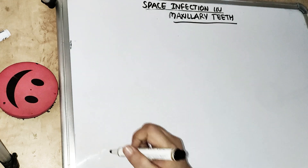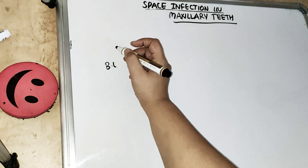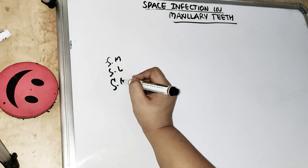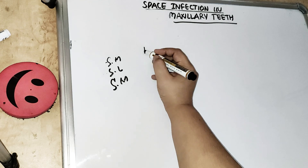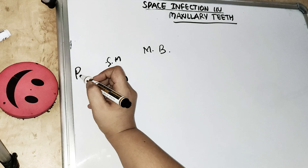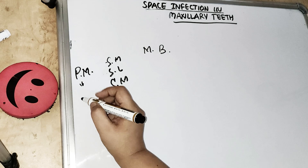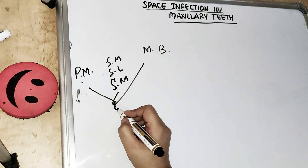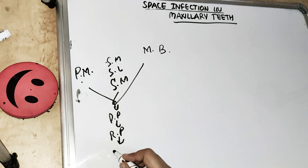Talking about space infection in the maxillary teeth — mandibular teeth we have already covered. For mandibular teeth there is sublingual space, submental space, and submandibular space going downward. On the other side we have the masseteric space and the buccal space. Then we have the pterygomandibular space, then the parapharyngeal space, and then everything can go into the retropharyngeal space and then down to the mediastinum. So it can actually be fatal.